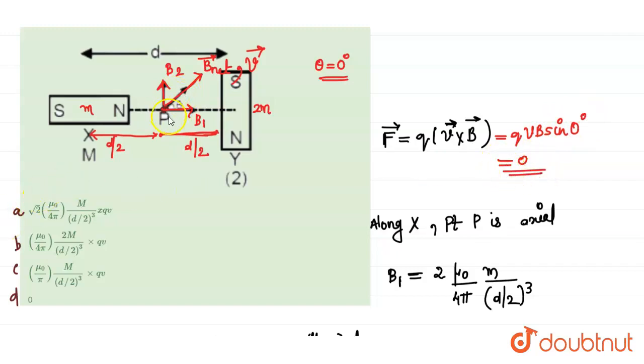So the net force on that particle P, when it is placed in this point, in this particular point, the net force is 0. So our answer matches with option B.